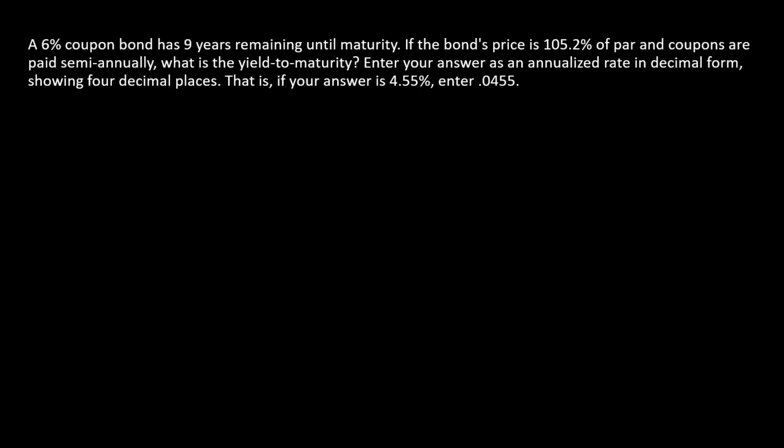Here's a yield to maturity problem where I'm expressing the price as a percentage of par. The easiest way to proceed in this case is just to set the par value equal to 100 and let everything else flow through accordingly.